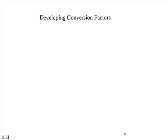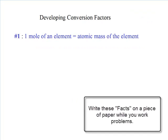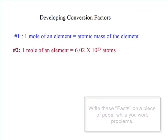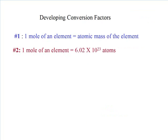Let's look at how to develop these conversion factors. Fact number one: one mole of an element equals the atomic mass of the element. Fact number two: one mole of any element has 6.02 times 10 to the 23rd atoms, or Avogadro's number.